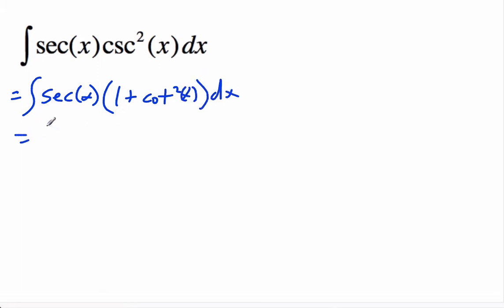When we do that, we get something that we can easily integrate because we'll get secant x plus secant x cotangent squared x.